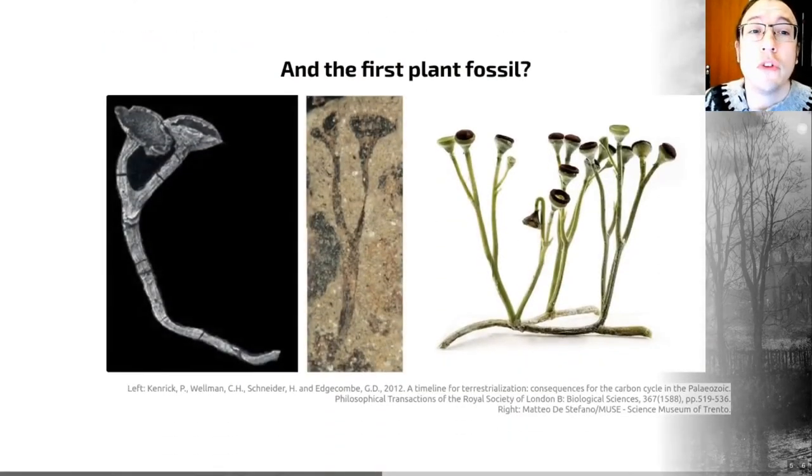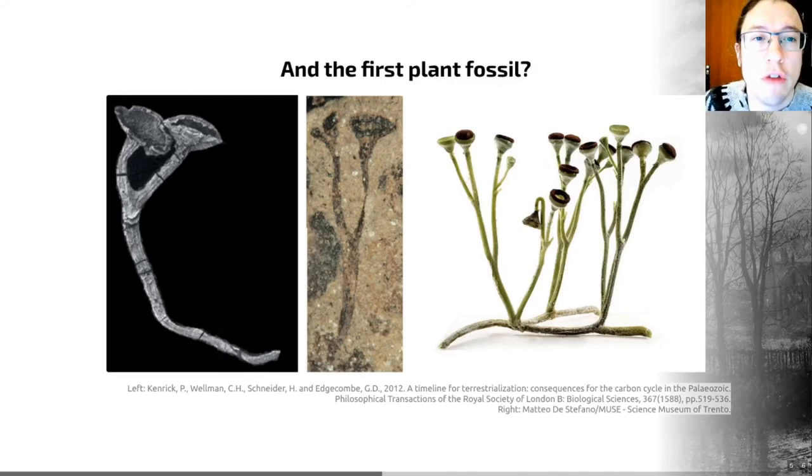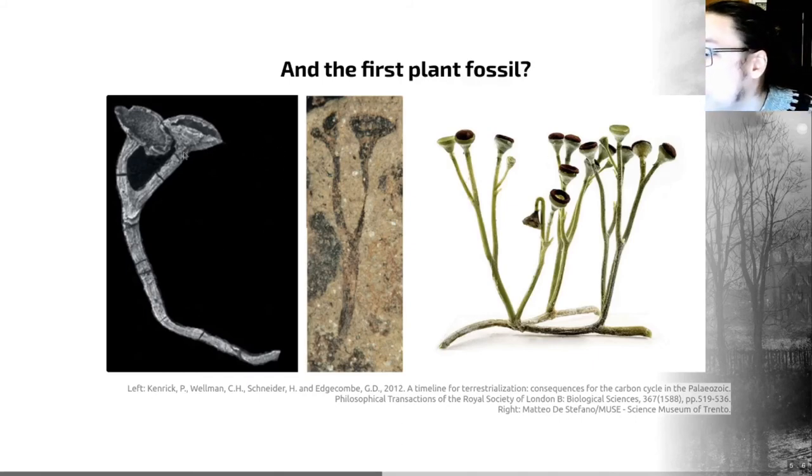So the first plant fossils of whole organisms that we can identify as being plants appear in the Silurian. These are small, they're frequently preserved as impressions comprising carbonized films in which little or no internal structure is preserved. The oldest generally accepted record of a land plant body fossil is a thing called Cooksonia. This is from the Silurian, about 425 million years in age. You can see some examples of Cooksonia fossils on this slide here.